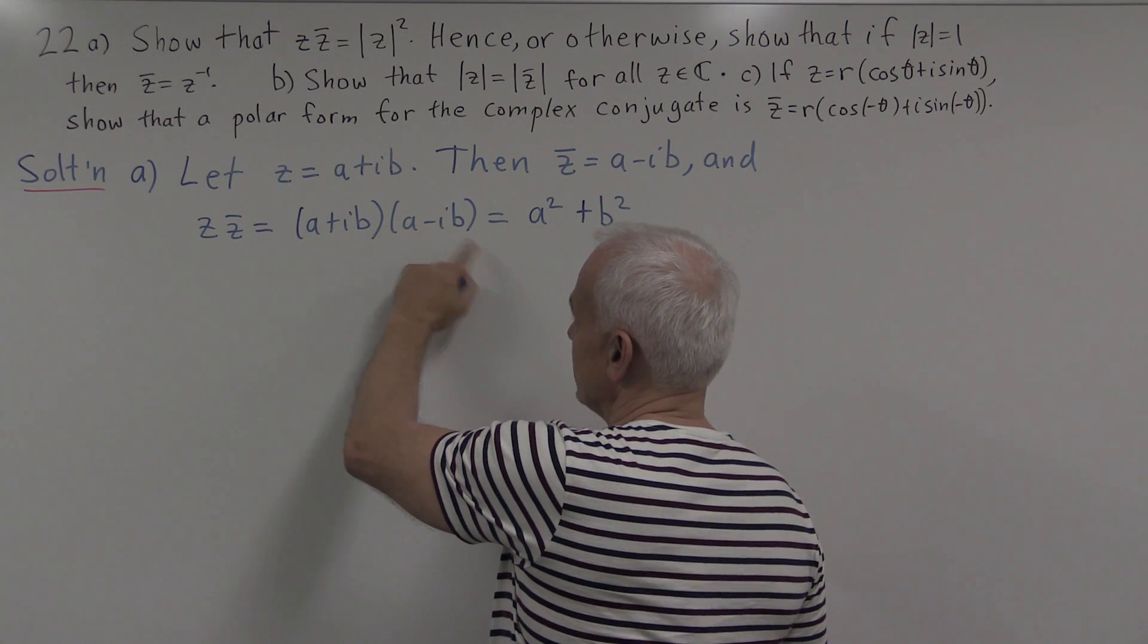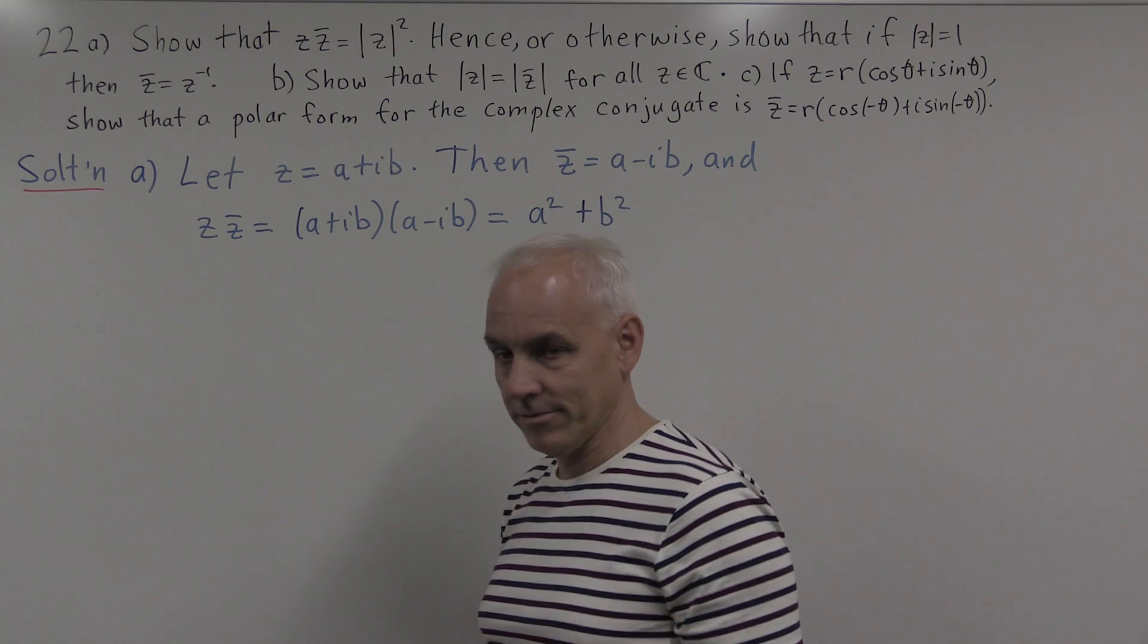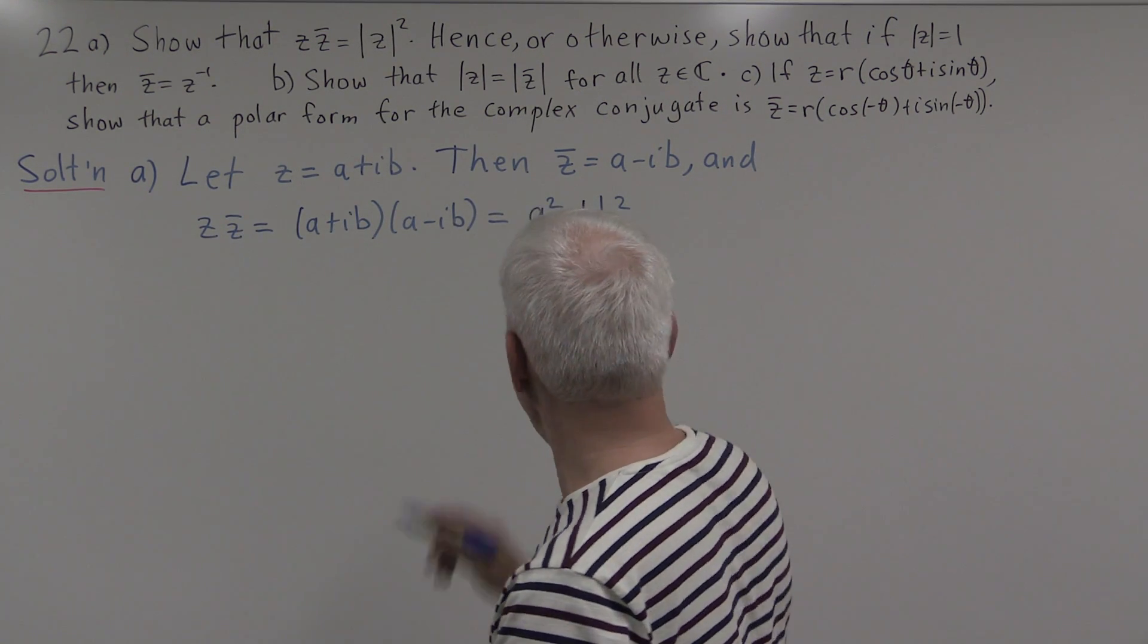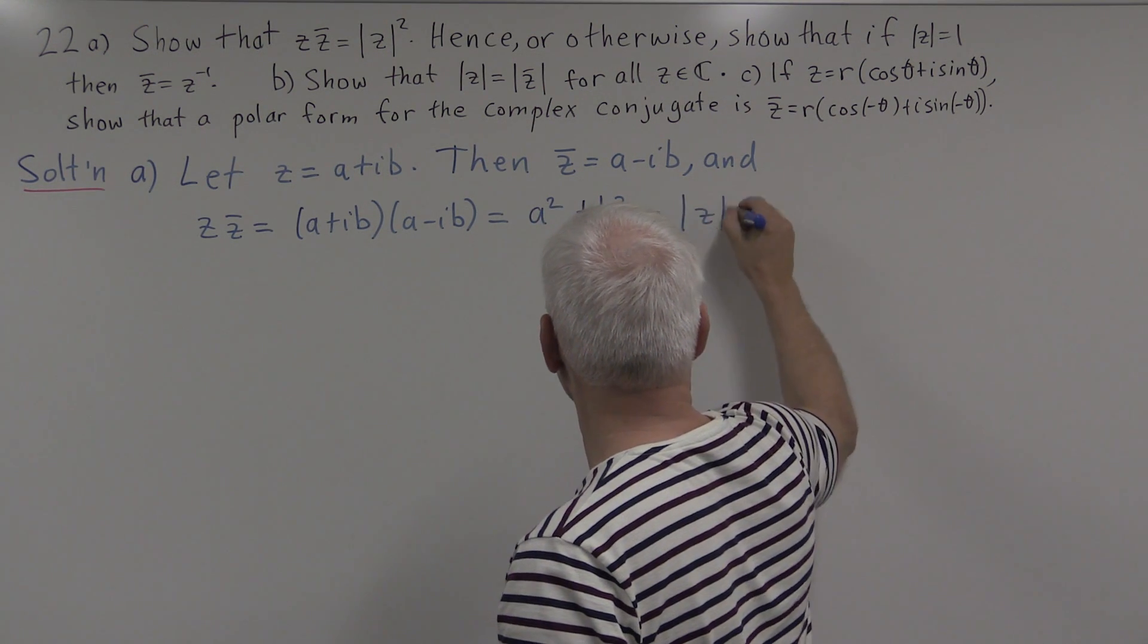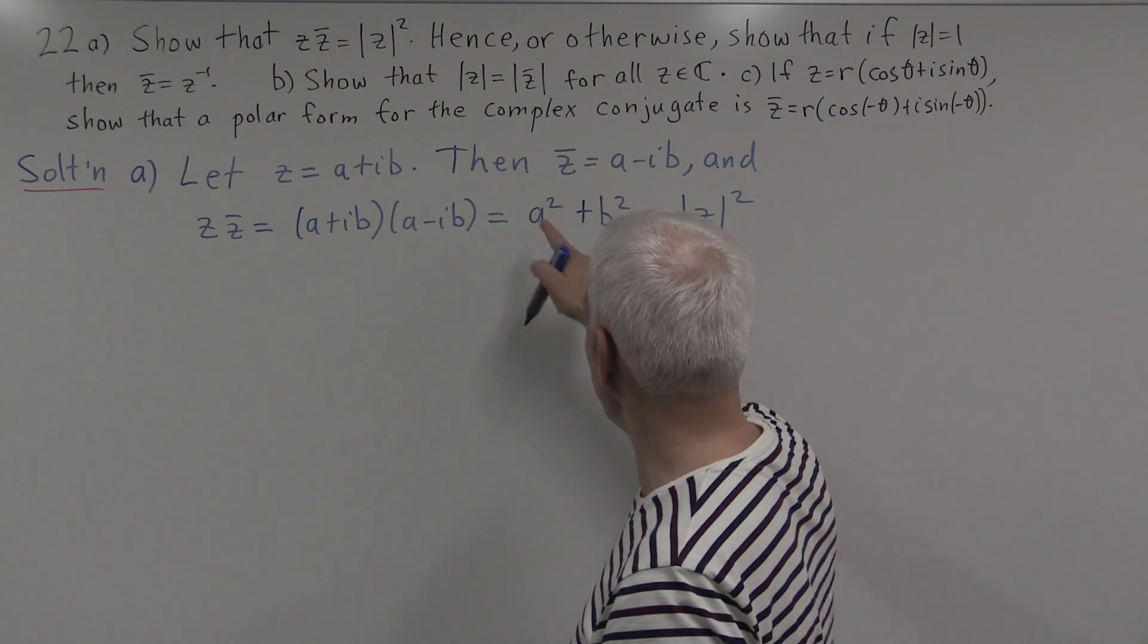So the complex number z times its complex conjugate z-bar is a² + b², which we recognize as the square of the modulus, because the modulus is defined to be the square root of this quantity.